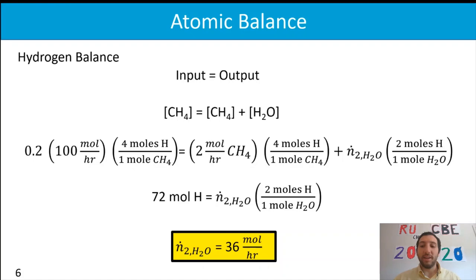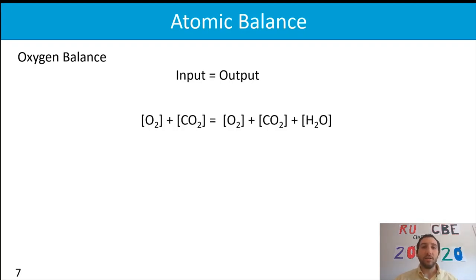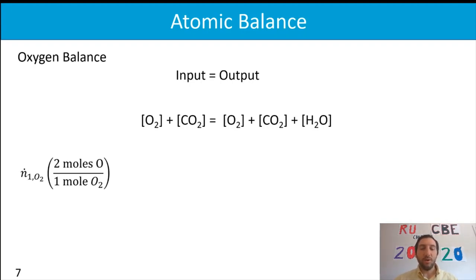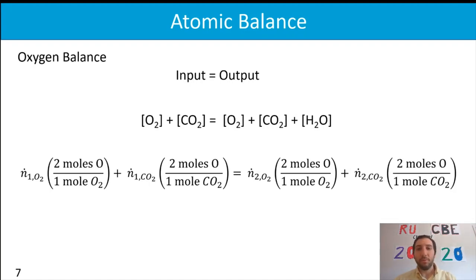Finally, we do an oxygen balance — again, input equals output. We identify the species containing oxygen. Coming in we have O₂ and CO₂; coming out we have O₂, CO₂, and water. We convert all molecular species into moles of oxygen atoms: moles of O₂ in stream one multiplied by two moles of oxygen atoms per mole of O₂, plus the oxygen present in carbon dioxide entering the system, equaling the oxygen in O₂, CO₂, and water in stream two.